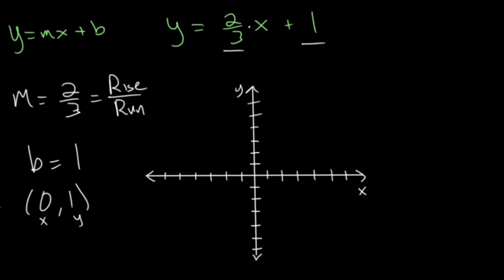And we're going to start by plotting that y-intercept first. So zero comma one. And now using slope, we go up two and over three. So up two, right three, because it's positive. So we're going up. So one, two, up, and then one, two, three, over.